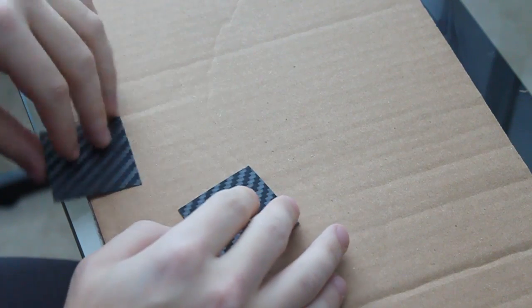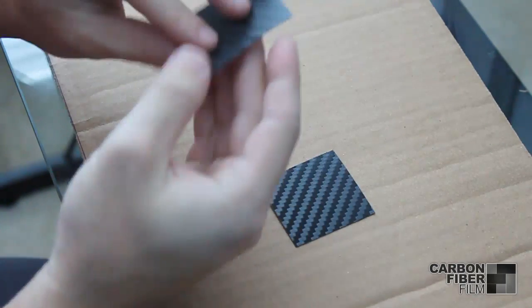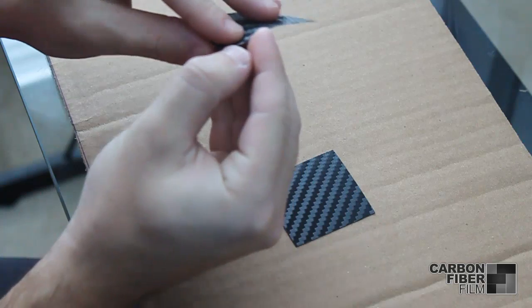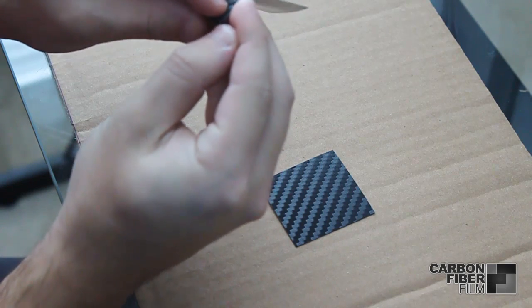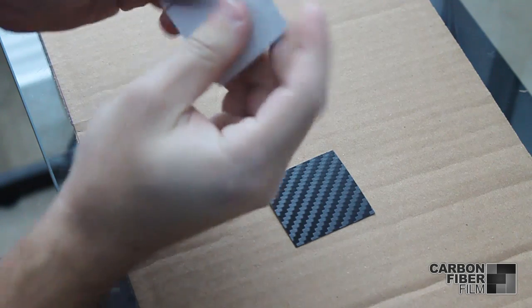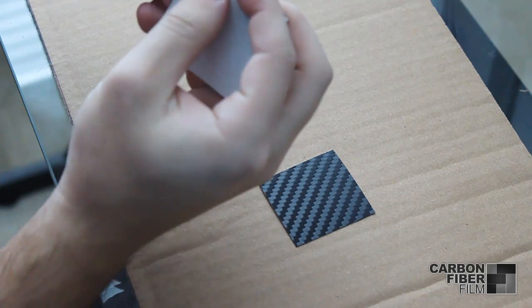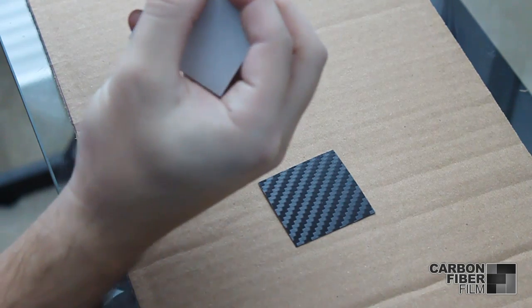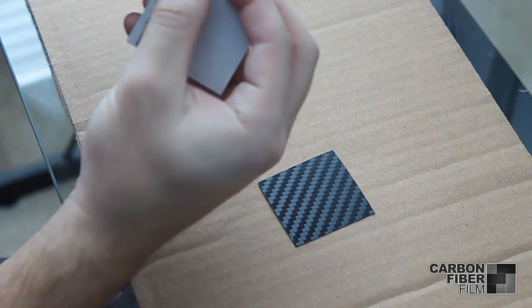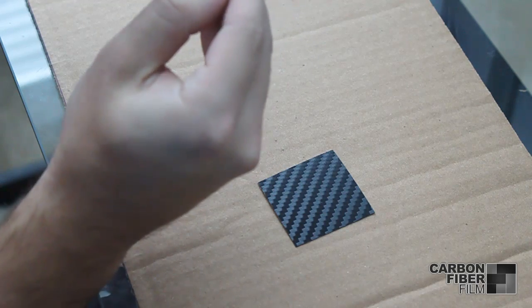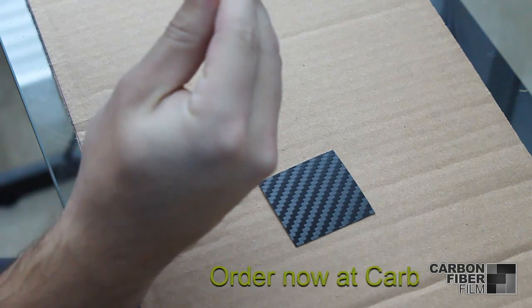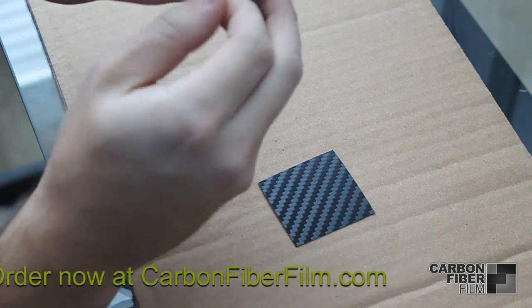One of the problems we've heard complaints about is that 3M's vinyl only comes in 48 inches wide. There's a technique called splicing which we can use to minimize the seam when extending the size of the vinyl. I'm going to show you how to do that in this video.